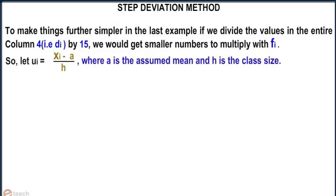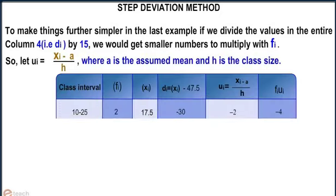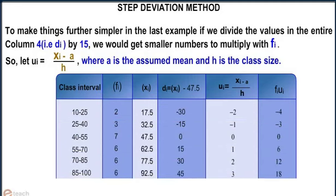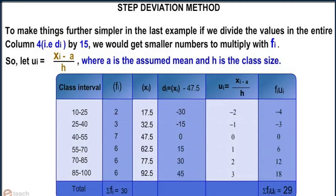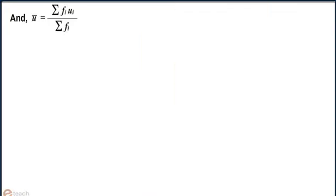So, let ui equals xi minus a divided by h, where a is the assumed mean and h is the class size. Let u bar equals summation fi ui divided by summation fi.